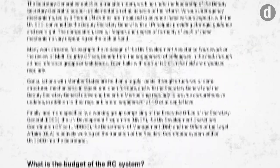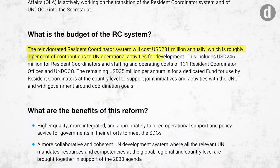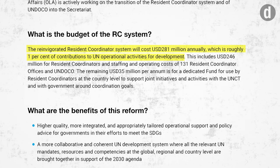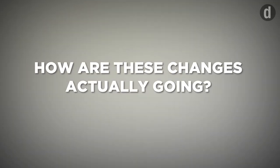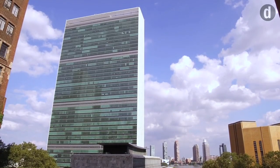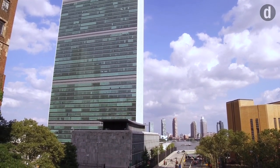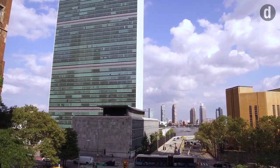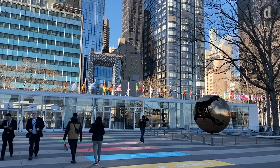These changes are expected to cost $281 million each year, or roughly 1% of the contributions that go to UN development work. So how are these changes actually going? To a large extent, it is too soon to say. Some of the resident coordinator posts were only filled within the last six months. The funding compact has yet to be established, and it will take time to understand how these changes, once in place, are actually helping bring the Sustainable Development Goals closer within reach.